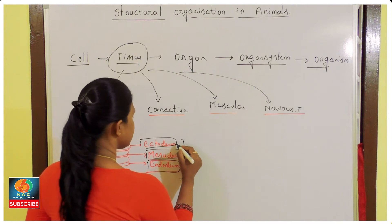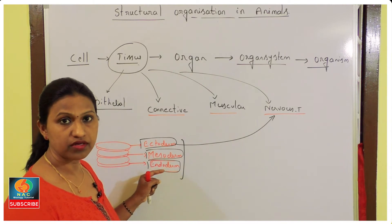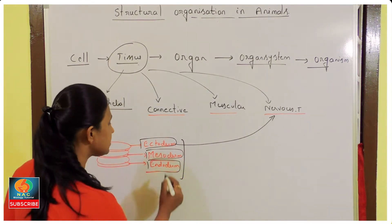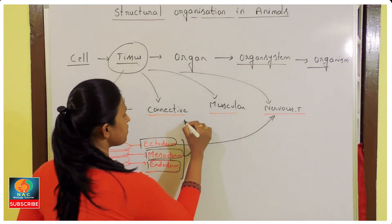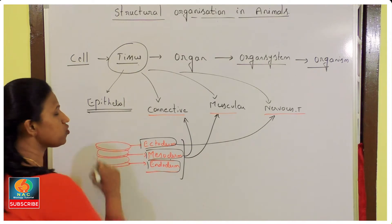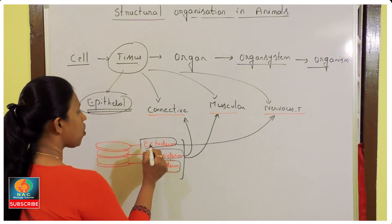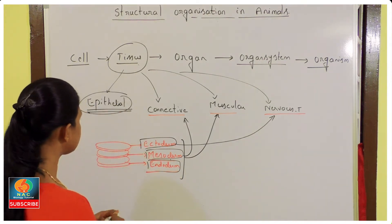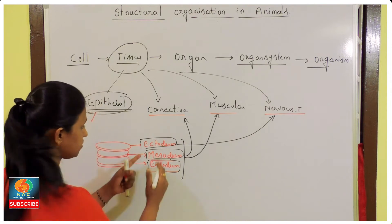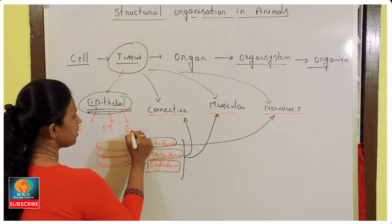The nervous tissue is made from the outermost layer, that is the ectoderm — this is one neat question. The mesoderm is responsible for the production of connective tissue and muscular tissue. Epithelial tissue is the special one, derived from all three germ layers. Some parts of epithelial tissue are formed from ectoderm, some from mesoderm, and some even from endoderm.